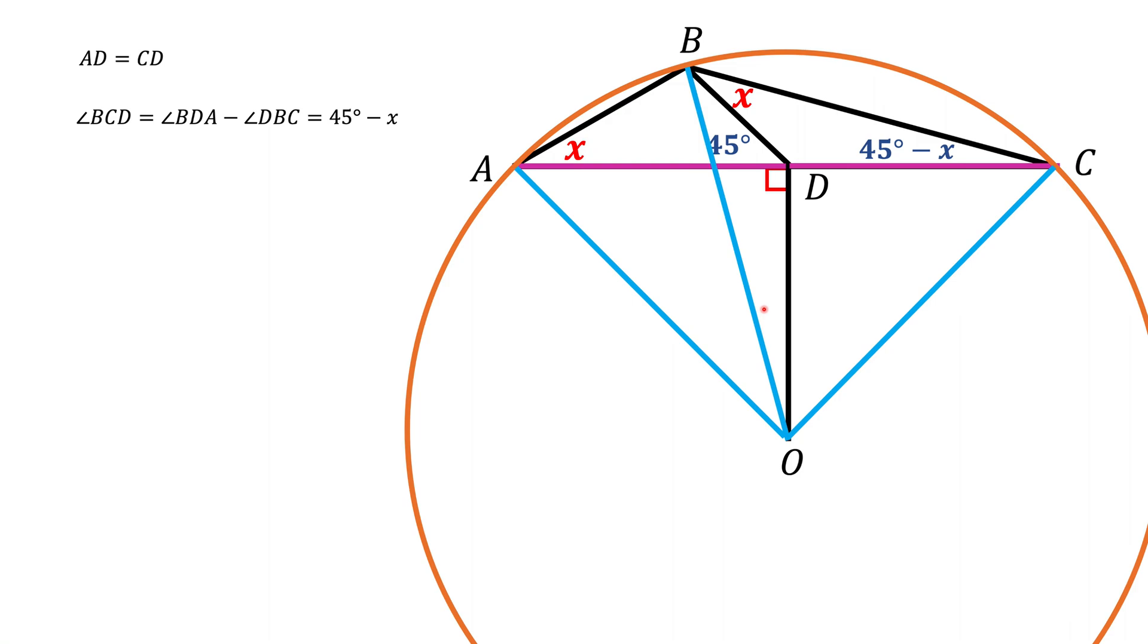So what are we going to do now? We're going to connect point O, the center of the circle, with all the points on this triangle: A, B, C, and D. And obviously AO, BO, and CO have the same length because they are radius. And that actually allows us to create several isosceles triangles. Triangle AOB is isosceles, BOC is isosceles, and AOC is an isosceles triangle.